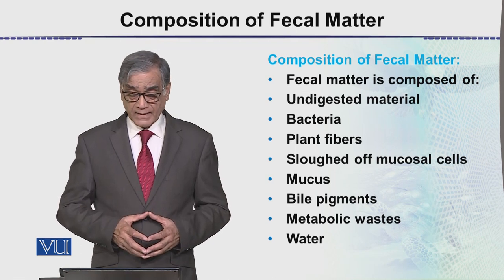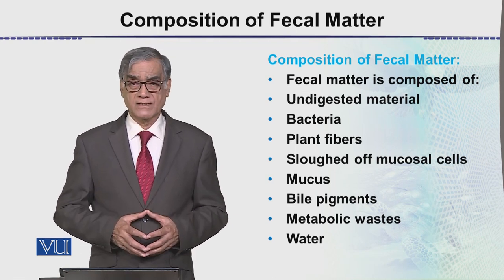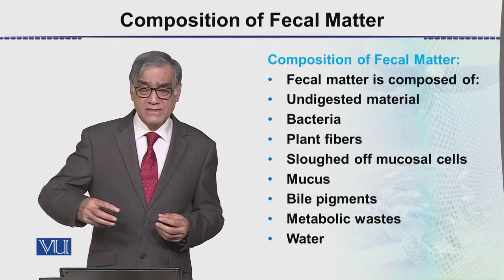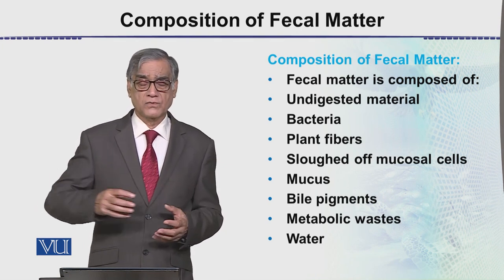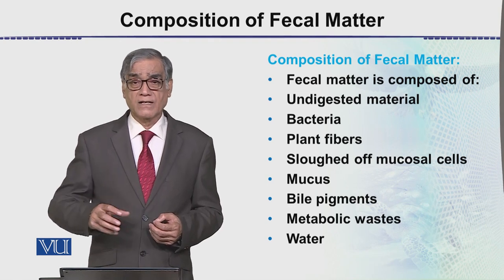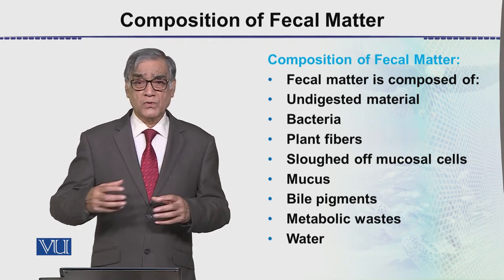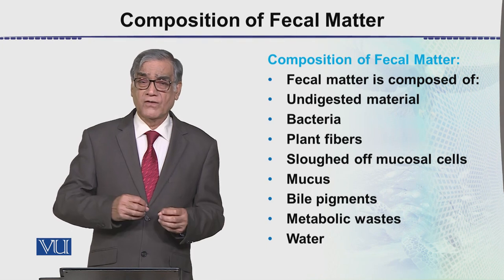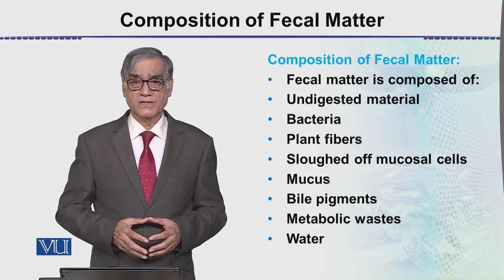Then there are sloughed off mucosal cells. Because when food passes through the intestine — through the small intestine, through the large intestine — some cells are sloughed off from the inner surface of the intestine.